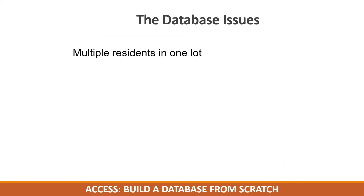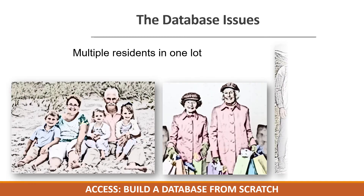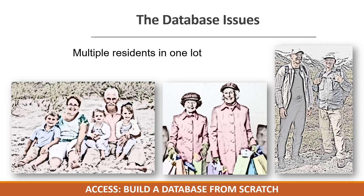Now that we have reviewed the client's problems, let's review the database issues. There are multiple residents in one lot. At first glance, it seems that a simple Excel spreadsheet would suffice. If we were only tracking issues by lot, a spreadsheet could work. However, we also need to contact the residents, and there are multiple residents in one lot. Some are traditional families, others siblings or friends who share the home, but also reside elsewhere, with mailing addresses in different locations.